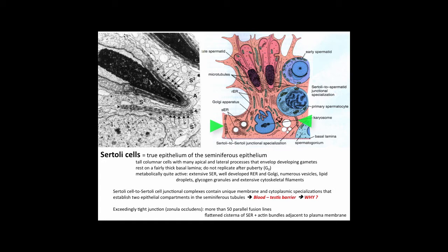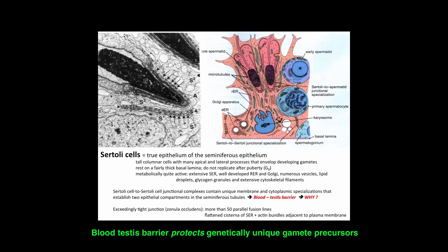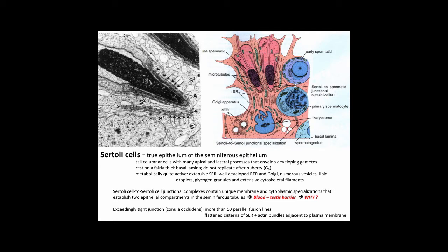Sertoli cell to Sertoli cell junctional complexes contain unique membrane and cytoplasmic specializations that essentially establish two epithelial compartments in the seminiferous tubules. This junctional complex gives rise to the blood-testis barrier. It consists of exceedingly tight zonular occludens — actually more than 50 parallel fusion lines — plus flattened cisternae of the smooth ER and bundles of actin filaments adjacent to the plasma membrane.